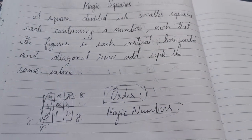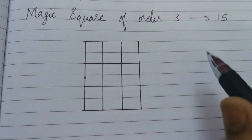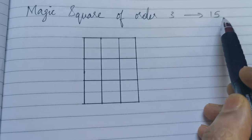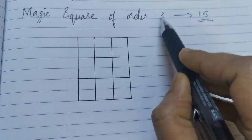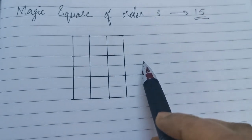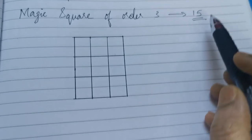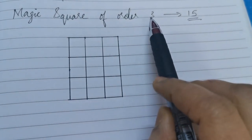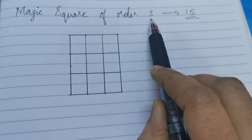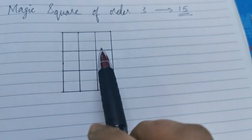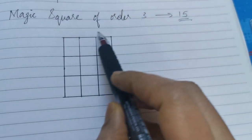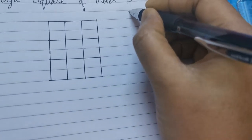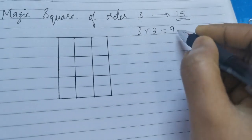First let's get into magic square of order 3. The magic number of a magic square of order 3 is 15. So horizontally, vertically and diagonally, when we add the numbers, the sum should be 15. To construct a magic square of order 3, there are various ways. We will discuss one arrangement here. We draw a square with 3 rows and 3 columns, meaning we can fill 9 numbers — from 1 to 9.